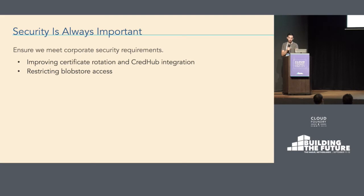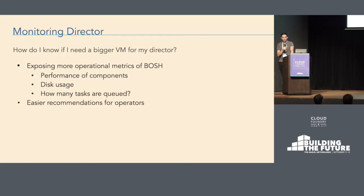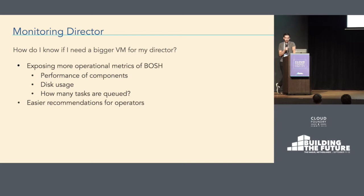We often hear: 'my director is slow, should I scale up?' Unfortunately our current recommendation is often just scale up and see if it fixes the problem. There are a lot of metrics that can be exposed by different plugins and add-ons, but a lot of these things aren't available for the director itself right now. We're working with metrics teams and other parts of the foundation to make sure questions operators have can be answered through director-exposed metrics — things like how many tasks are queued, how big is my task queue, how many workers do I have, how many threads are in flight — all metrics we're hoping to expose into the firehose using indicator protocols.